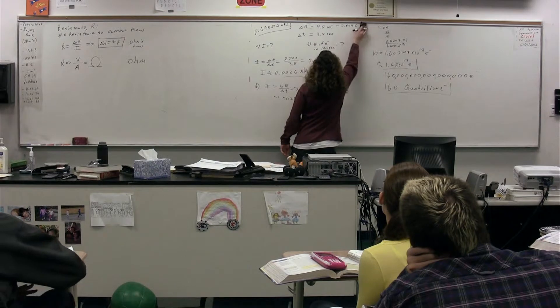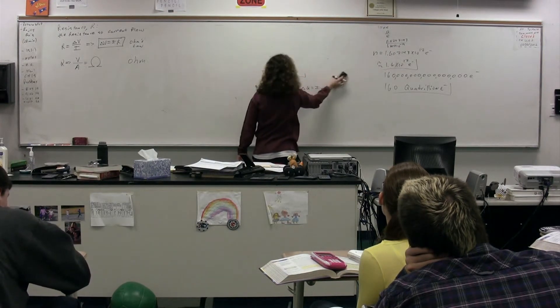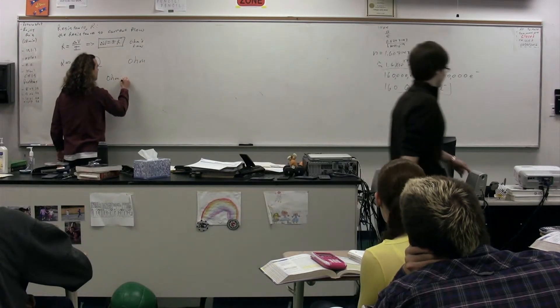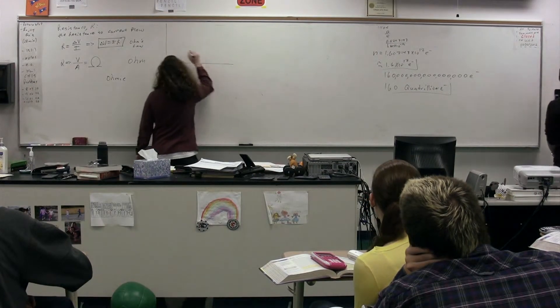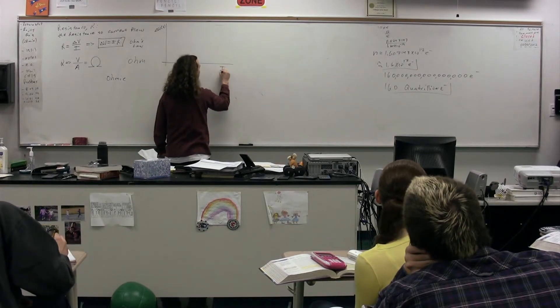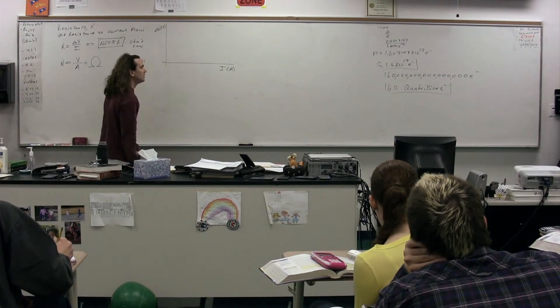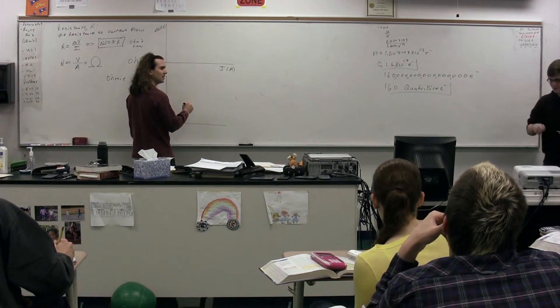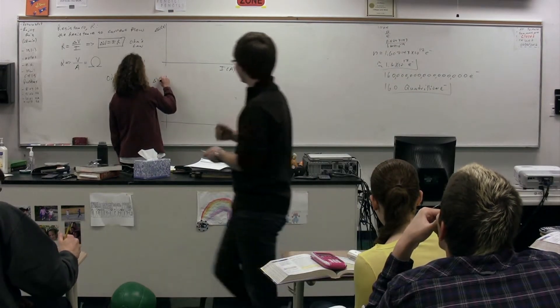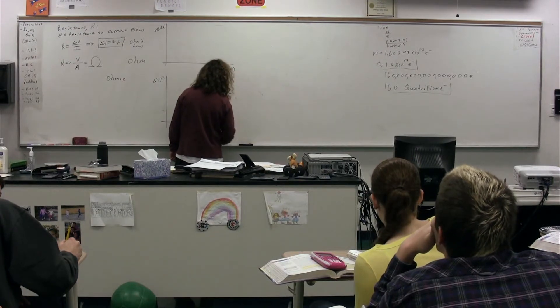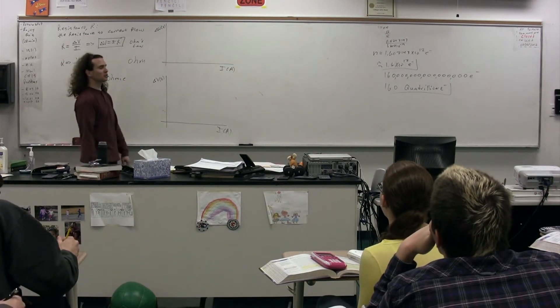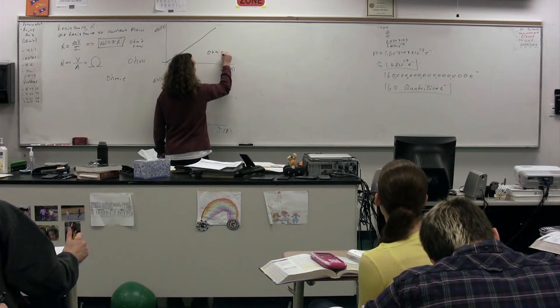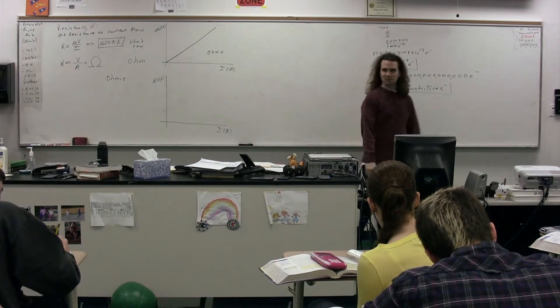He showed that many substances followed Ohm's Law and therefore were considered to be Ohmic. Substances that follow Ohm's Law are called Ohmic. And if you plot the electric potential difference, when we plot the electric potential difference as a function of current for a substance that is Ohmic, we get a linear relationship. This is an Ohmic substance.